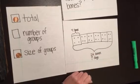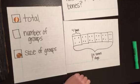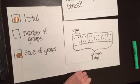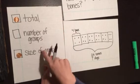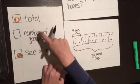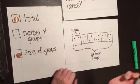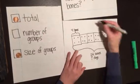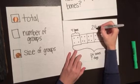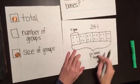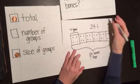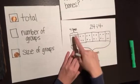Now I need to make a number sentence to go with my question. So because I knew the total and the size of the groups but not the number of groups, this is a division problem. So I start with my total, 24, divided by the other number I knew, the size of the groups, four, equals how many groups?